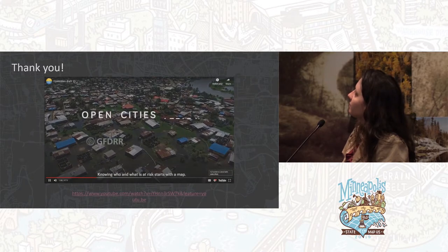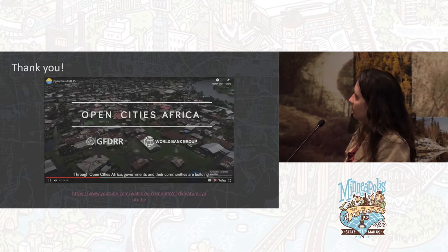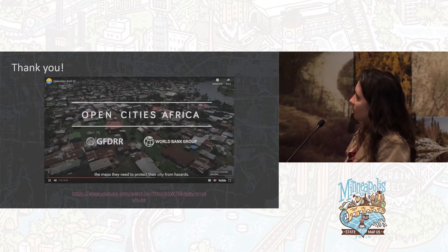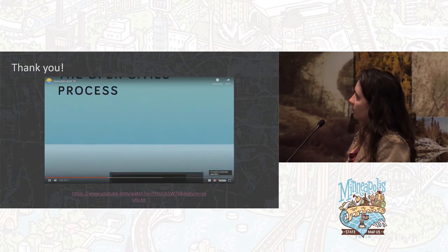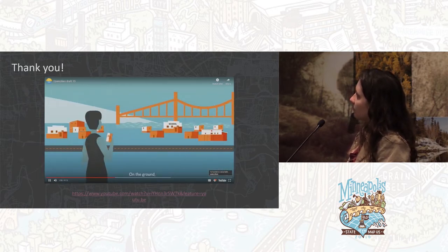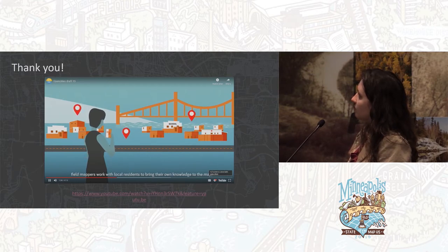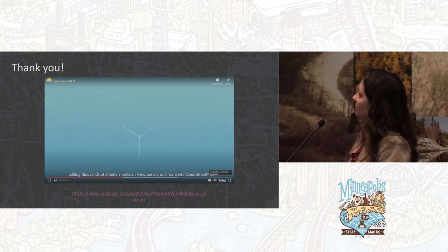Knowing who is at risk starts with a map. Governments and their communities are building the maps they need to protect their cities from hazards. Open Cities teams adapt innovative new technologies and local fieldwork to gather information. At the desk, students and other mappers use drone and satellite imagery to trace buildings and visible features. On the ground, field mappers work with local residents to bring their knowledge to the map, adding thousands of streets, markets, rivers, and canals into OpenStreetMap.